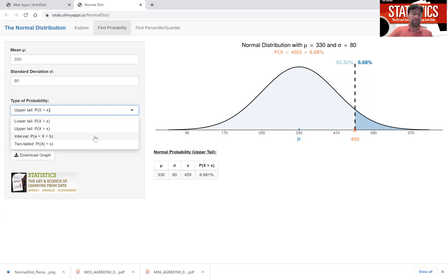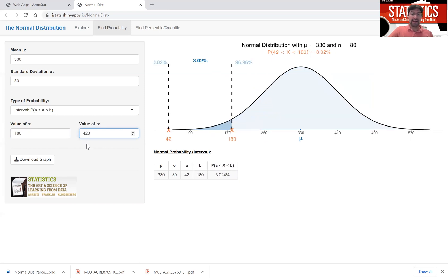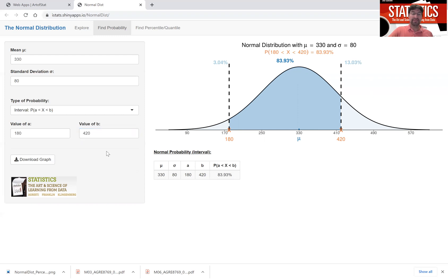You can even get interval probabilities. Suppose you're interested in the probability of the talk time falling in between, let's say, 180 minutes and 420 minutes. And we find that that probability is equal to, between 180 and 420, is equal to 83.9%. Now suppose your friend comes along and says,